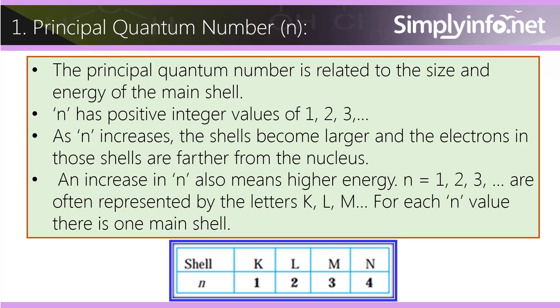n has positive integer values of 1, 2, 3. As n increases, the shell becomes larger and the electrons in those shells are farther from the nucleus. An increase in n also means higher energy.